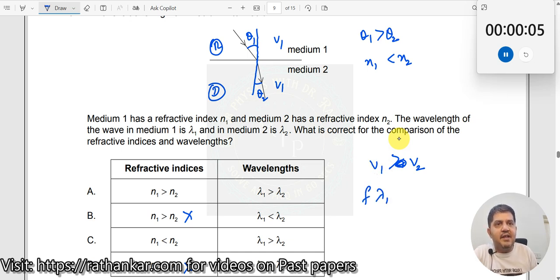Which means that f times lambda 1 should be greater than f times lambda 2. Frequency does not change when a ray enters from rarer medium to a denser medium. Therefore, f cancels. So lambda 1 should be greater than lambda 2.